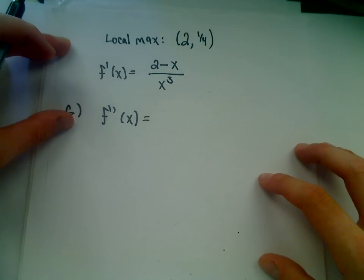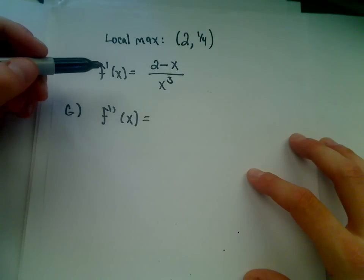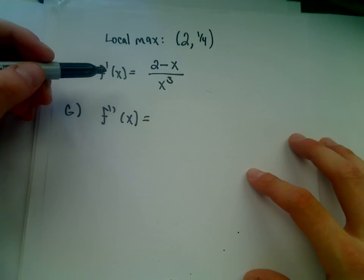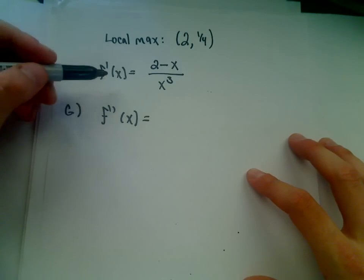Alright, this is going to be the continuation of the curve sketching problem. So I think we just finished off figuring out where the function is increasing and decreasing. Again, that helped us find local maximums and minimums. Part G said you want to figure out the concavity and any inflection points. It's almost an exact repeat of what you did in step F.